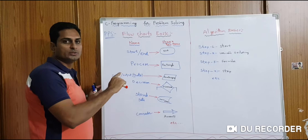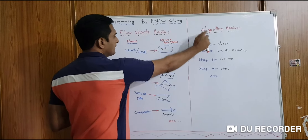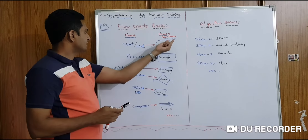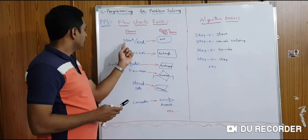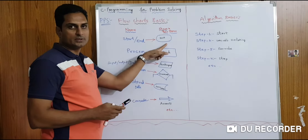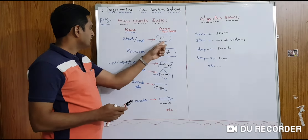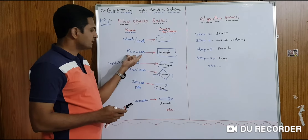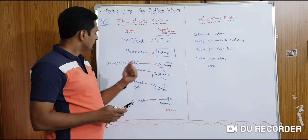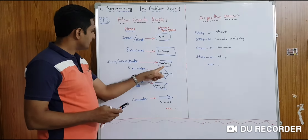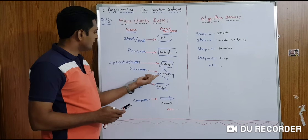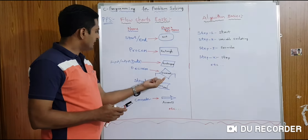A program can be expressed as flowcharts and algorithms. Flowchart basics include shapes and their names. The program start and end are indicated with an oval shape. Any process or variable declaration is indicated with a rectangle box. Any input-output data is indicated with a parallelogram symbol. A decision or if-condition is indicated with a diamond.